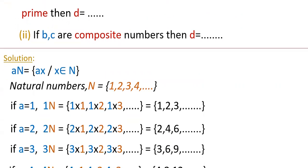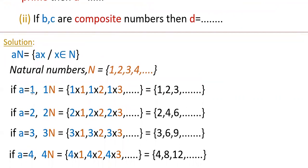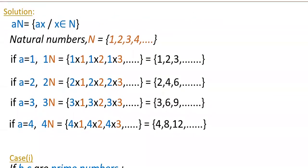Let's check by substituting values of A. If A=1, then 1·n gives natural numbers: 1, 2, 3, etc. If A=2, that is 2N, you get 2, 4, 6, etc. — multiples of 2. If A=3, 3N gives 3, 6, 9, etc. — multiples of 3. If A=4, 4N gives 4, 8, 12, etc. — multiples of 4.